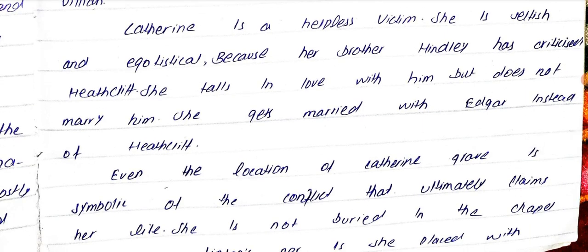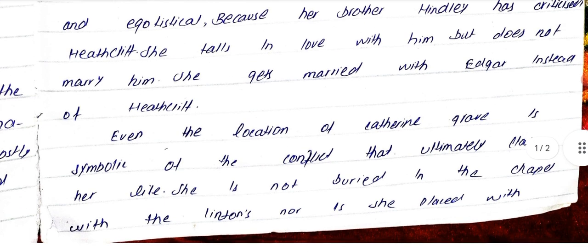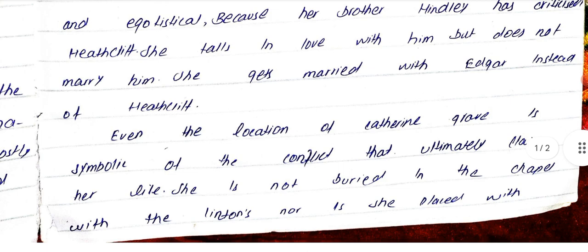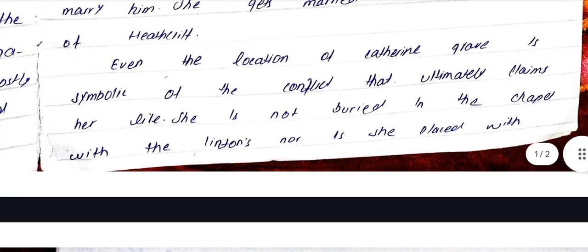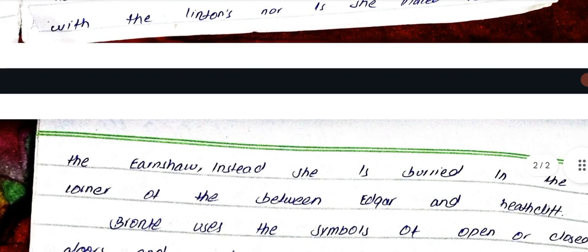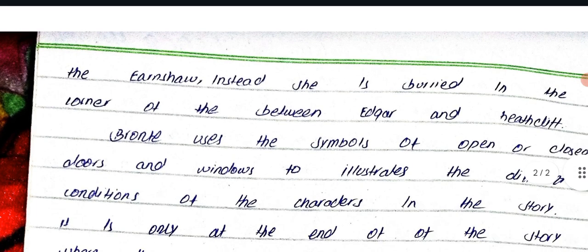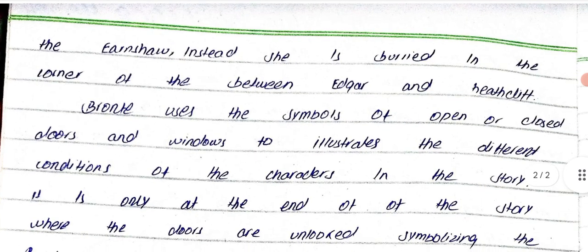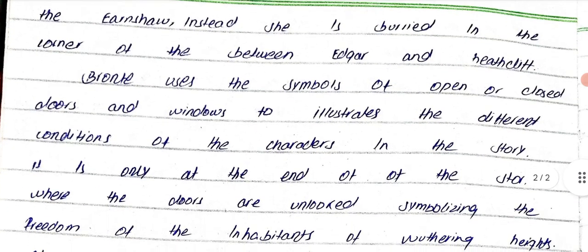Even the location of Catherine's grave is symbolic of the conflict that ultimately claims her life. She is not buried in the chapel with the Lintons, nor is she placed with the Earnshaws. Instead, she is buried in a corner between Edgar and Heathcliff. Bronte also chooses the symbol of open and closed doors and windows to illustrate the different conditions of the characters in the story.